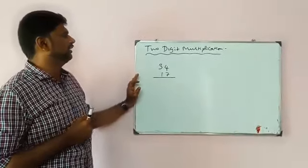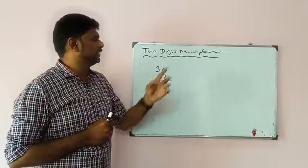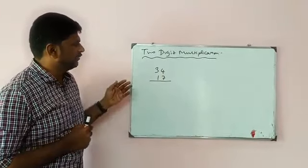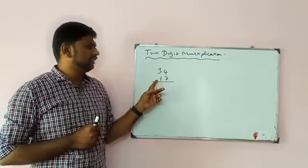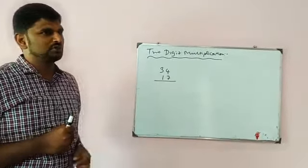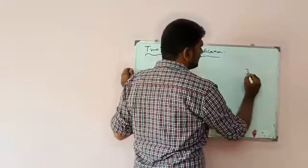Very good morning to all. Today we will discuss a new Vedic mathematics lesson: two-digit multiplication. For example, I have taken two numbers, 34 into 17. Most of the students will do it in the usual way. The usual method is 34 into 17.